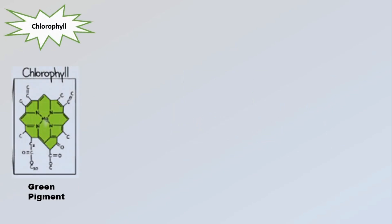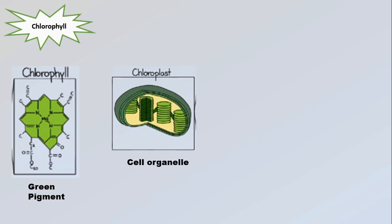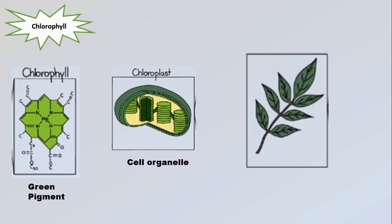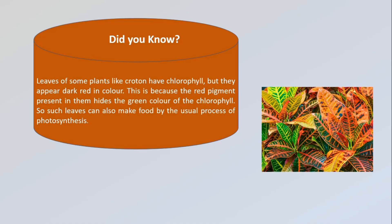The next requirement for photosynthesis is chlorophyll. Chlorophyll is a green pigment present in the cell organelle called chloroplast. The green color of plants is due to the presence of chlorophyll, mostly in the green leaves. Chlorophyll traps solar energy which is used to synthesize food from carbon dioxide and water. Some leaves like croton have chlorophyll but appear dark red because the red pigment hides the green color, but they can still make food by photosynthesis.